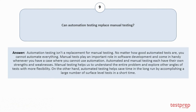Question number nine: Can automation testing replace manual testing? Automation testing isn't a replacement for manual testing. No matter how good automated tests are, you cannot automate everything. Manual tests play an important role in software development. Automated and manual testing each have their own strengths and weaknesses. Manual testing helps understand the entire problem with more flexibility, while automated testing helps save time by accomplishing a large number of surface-level tests in a short time.